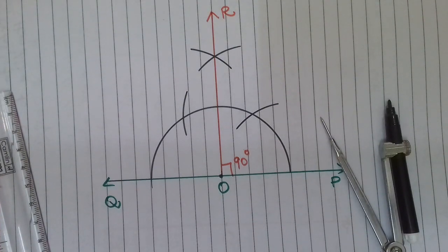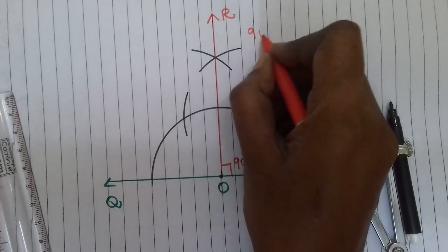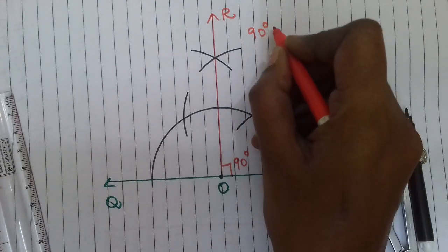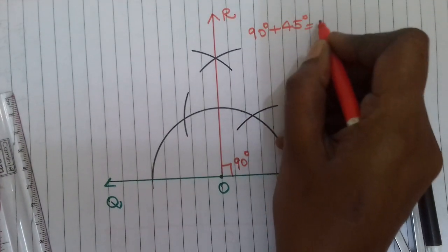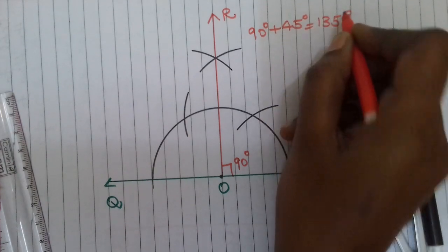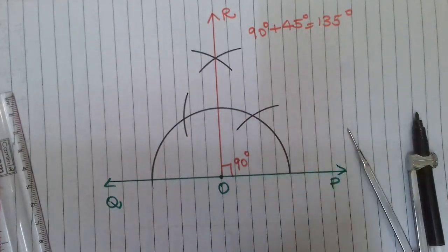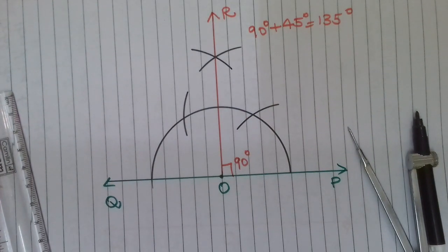In the 135-degree construction, this is why we construct 90 degrees first. Because 90 degrees plus 45 degrees equals 135 degrees. So after the 90-degree construction, the next step is to construct a bisector to get the 45 degrees.